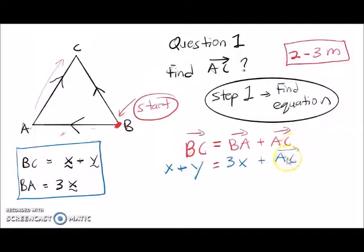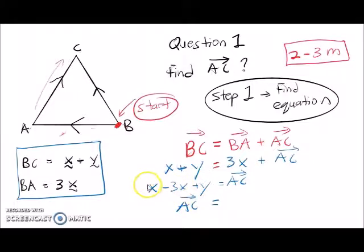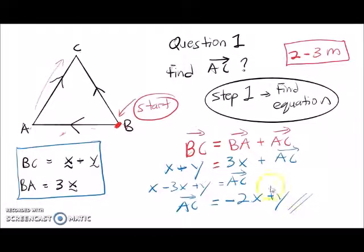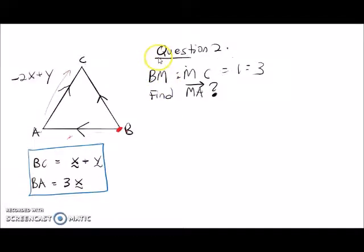We can see that AB here is given by 3x, and the question asks us to find AC. Moving 3x to the left gives us negative. Your equation for AC: 1 minus 3 gives negative 2x plus y. So AC is given by negative 2x plus y.